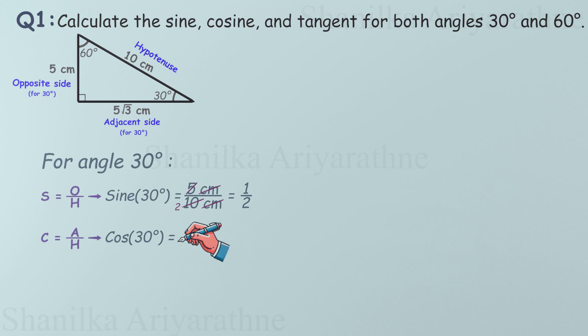Next, cosine of 30 degrees: adjacent by hypotenuse, 5√3 over 10, which simplifies to √3 over 2. And finally, tangent of 30 degrees: opposite by adjacent, 5 over 5√3, which simplifies to 1 over √3.